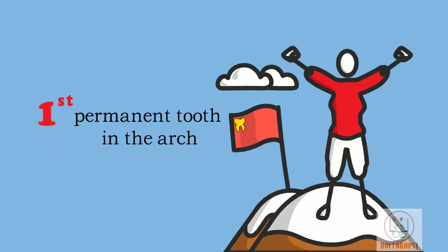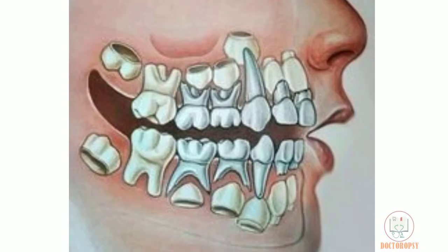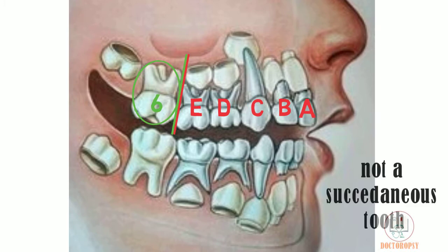It is the first permanent tooth to erupt in the arch. It erupts posterior to the second deciduous molar, not removing any of the primary teeth. Thus, like all permanent molars, it is not a succidaneous tooth as it has no predecessor.